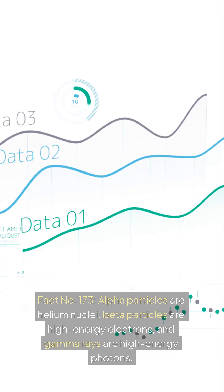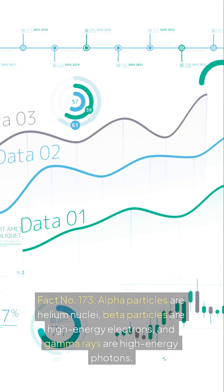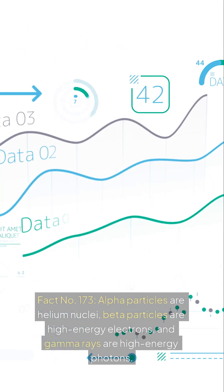Fact number 173: Alpha particles are helium nuclei, beta particles are high-energy electrons, and gamma rays are high-energy photons.